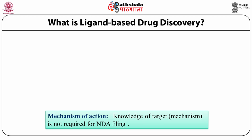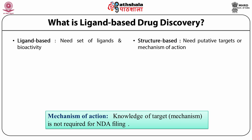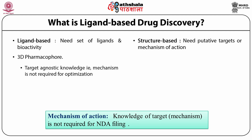Ligand-based drug discovery and structure-based drug discovery are two different kinds of drug discovery. Ligand-based needs the structure and bioactivity of many compounds, whereas structure-based requires a putative target or mechanism of action to be known. The 3D pharmacophore design is one process where target or agonistic knowledge mechanism is not required for optimization, but active site shape and complementary search is necessary for structure-based design.